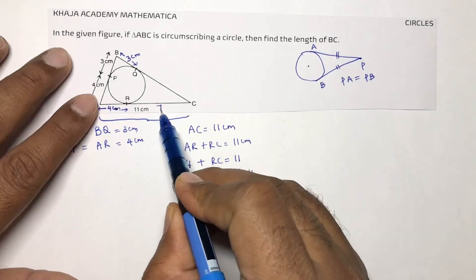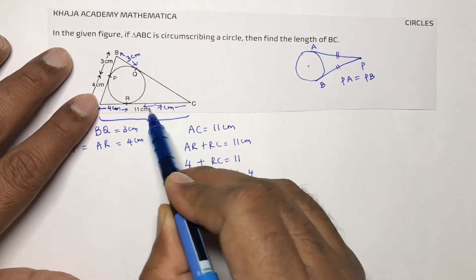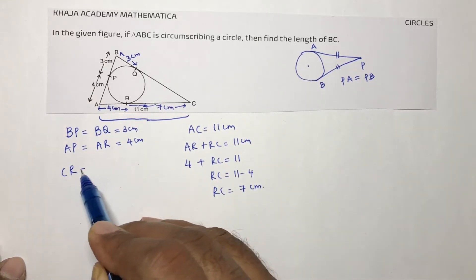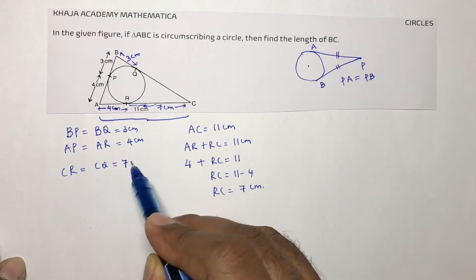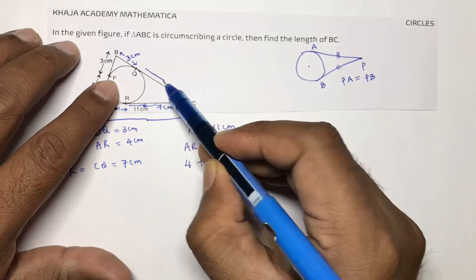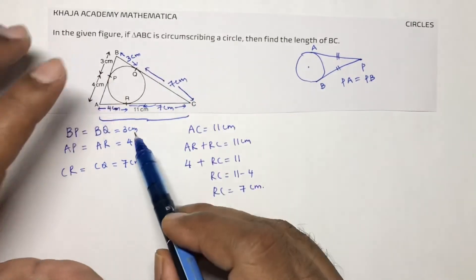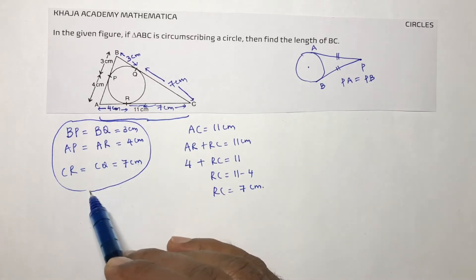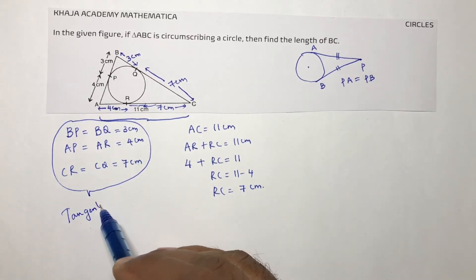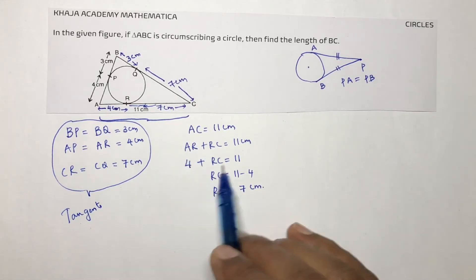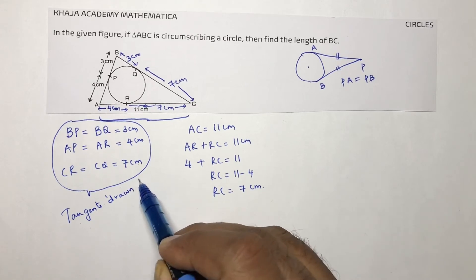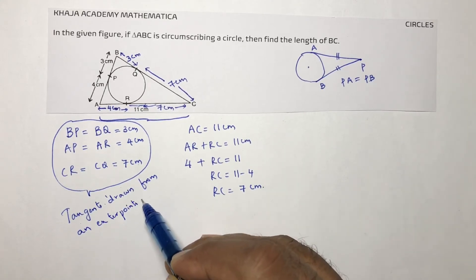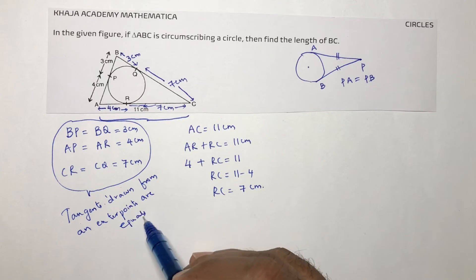RC is 7 centimeters, and since CR equals CQ (tangents from external point C), CQ is also 7 centimeters. For all these steps, you need to write the reason: tangents drawn from an external point are equal.